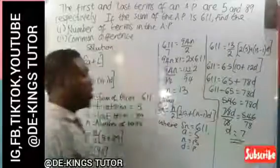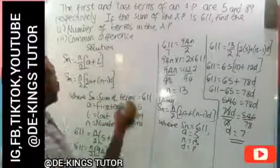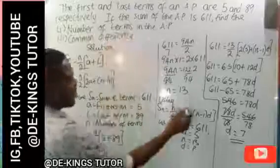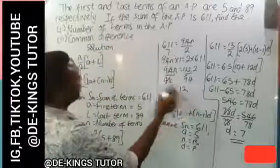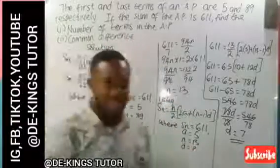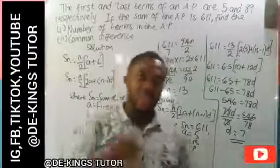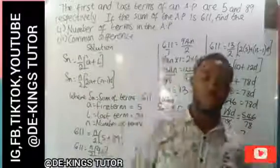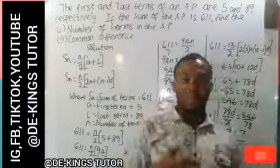So the first answer, which is the number of terms in the AP, is 13, while the common difference is 7. Thank you very much, and if you are joining us for the first time, please subscribe, like, comment and share this video.